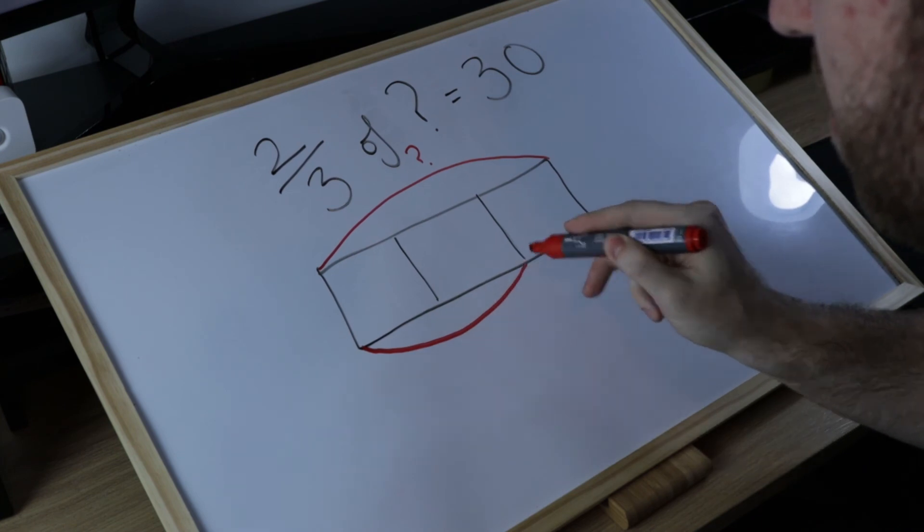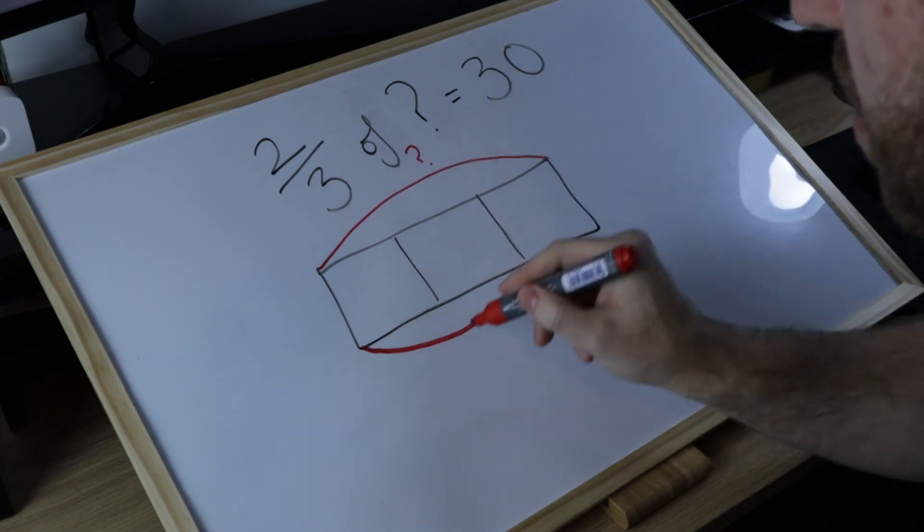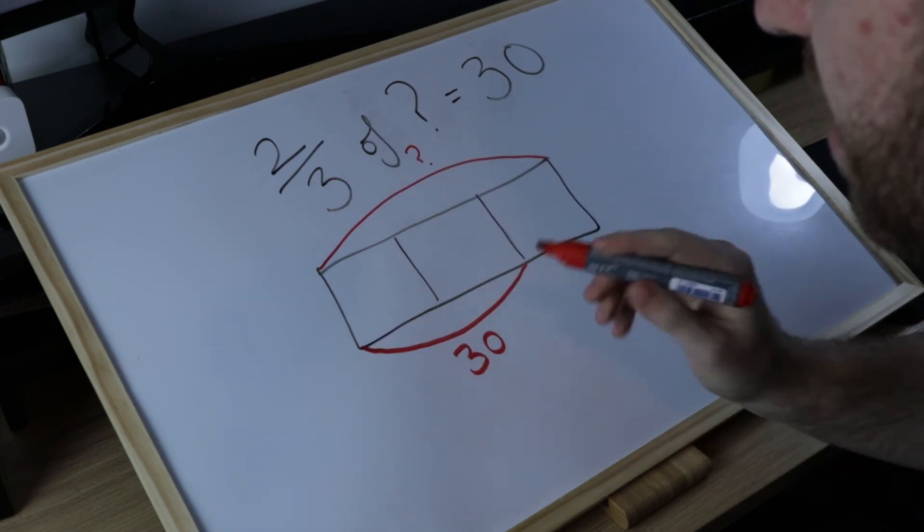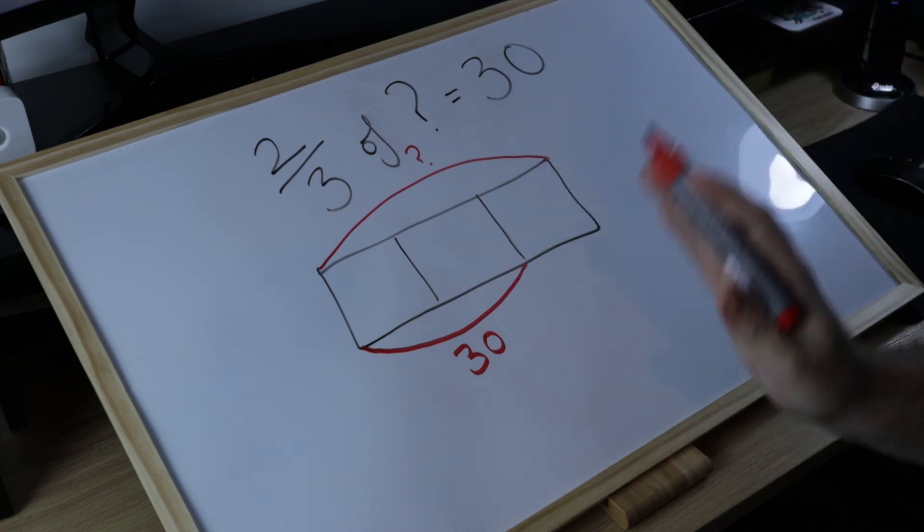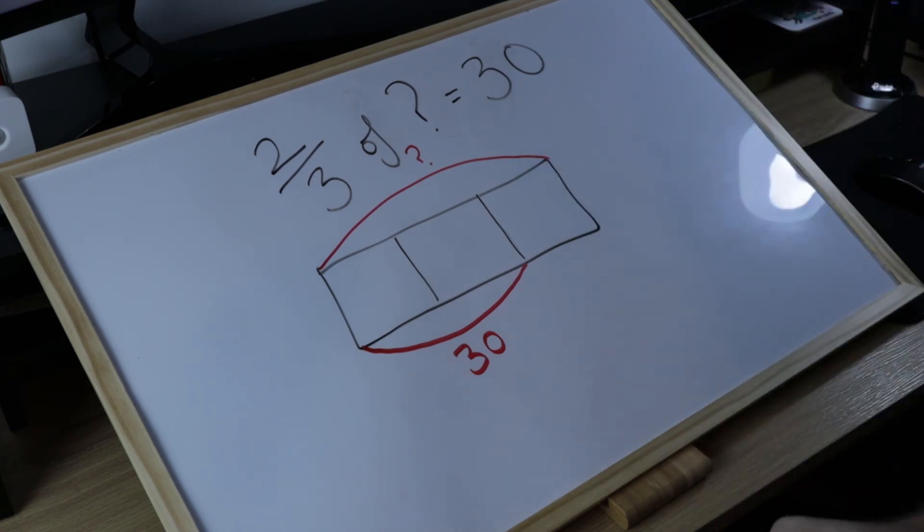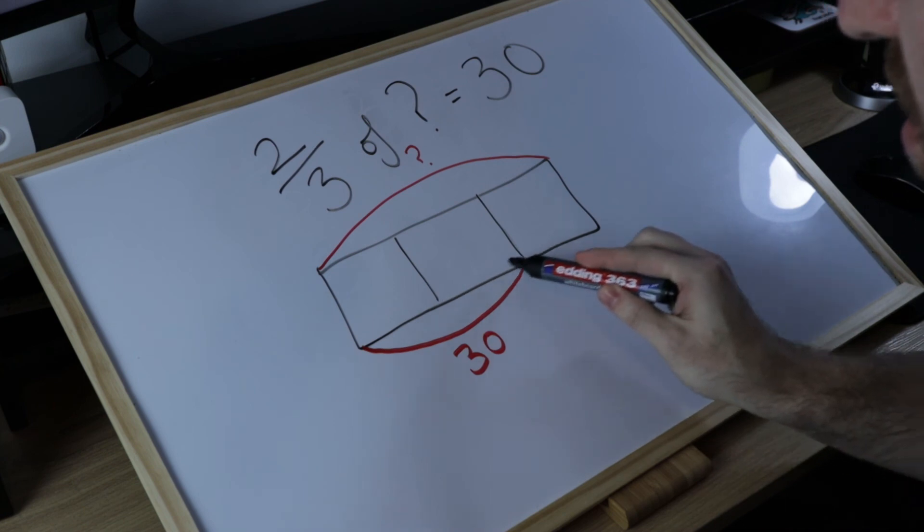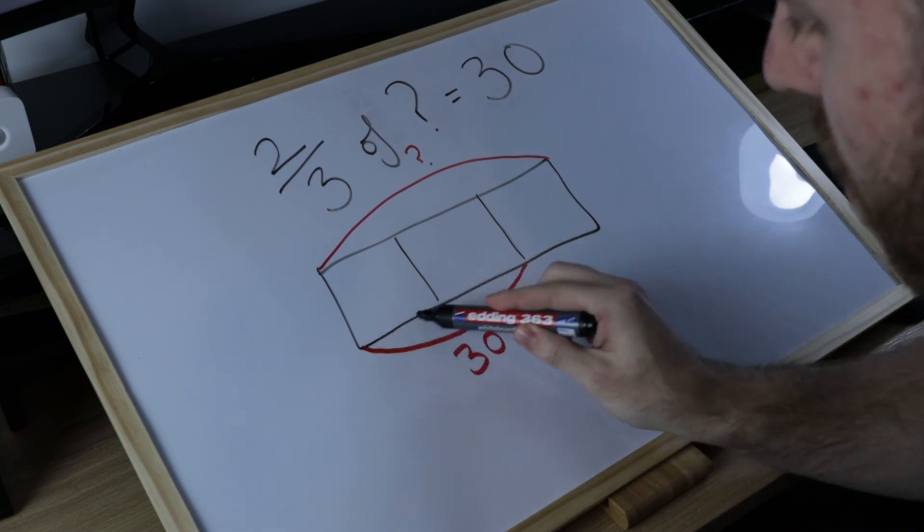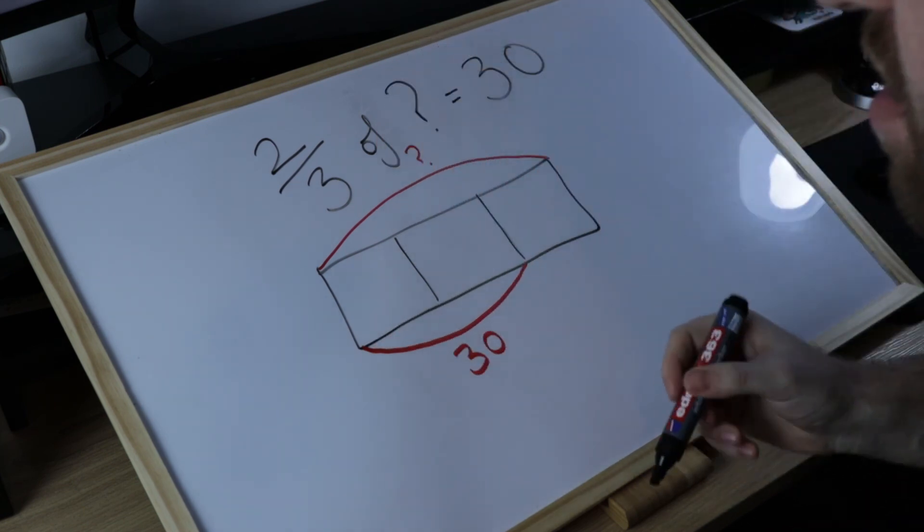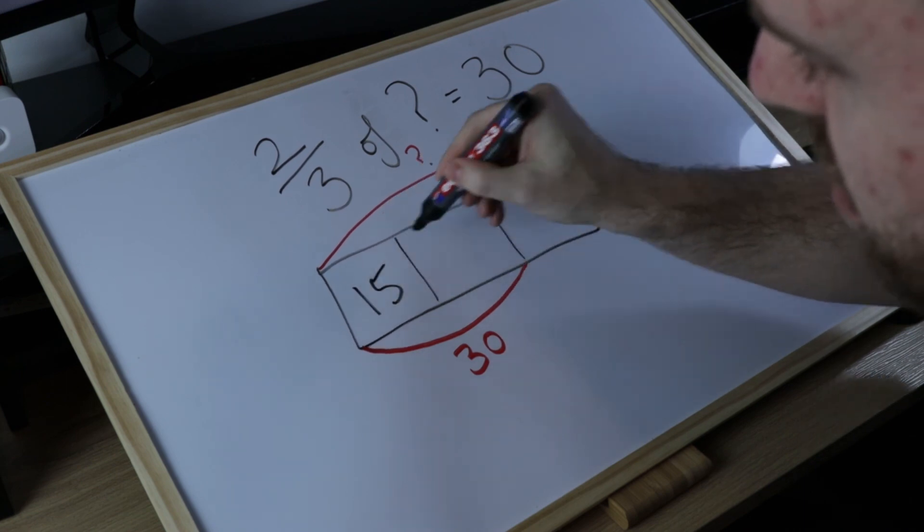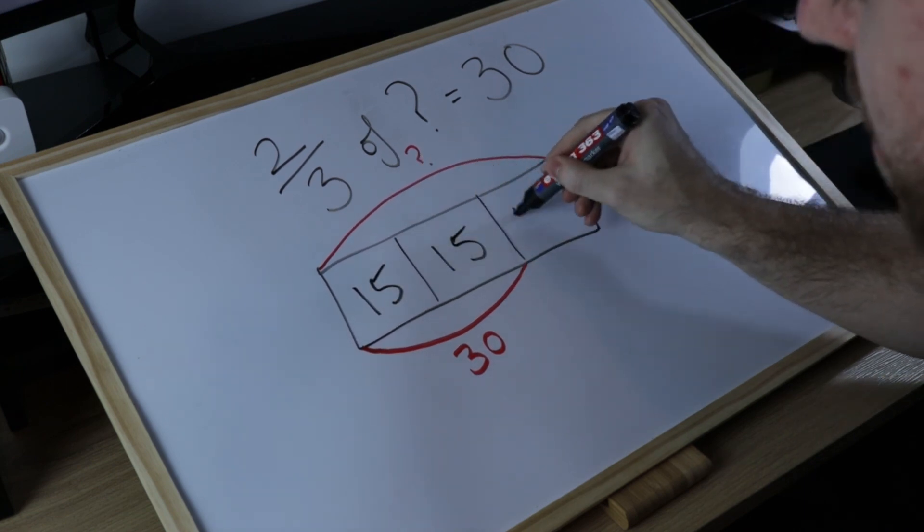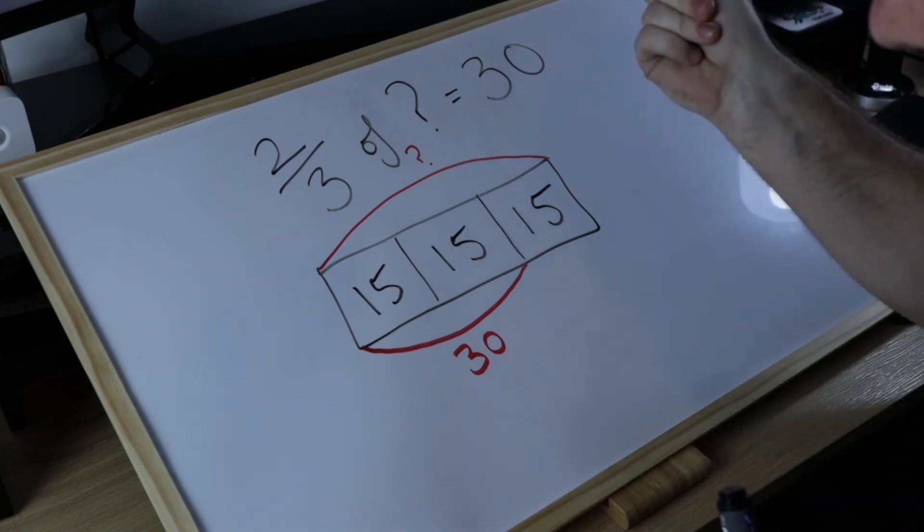So I'll be thinking to myself, how can I label two-thirds in this diagram? Well I can do my bracket across two of my thirds. I know it's equal to 30, and now I'm in a position to solve this trickier question. If I know that two-thirds are 30, then one-third must be half of 30, and I can start filling in my equal parts like this, and all of a sudden it clicks.